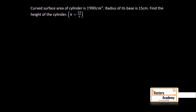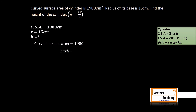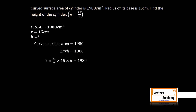The curved surface area of a cylinder is 1980 cm². The radius is given as 15 centimeters and we have to find the height. Using the formula 2πRH = 1980, substituting 2 × (22/7) × 15 × H = 1980. Dividing all terms and solving, we get H = 21 centimeters.